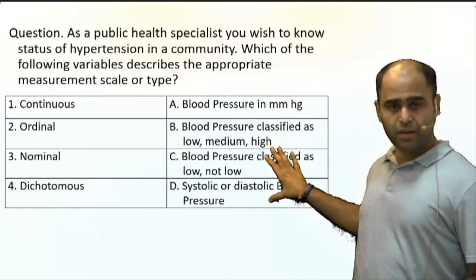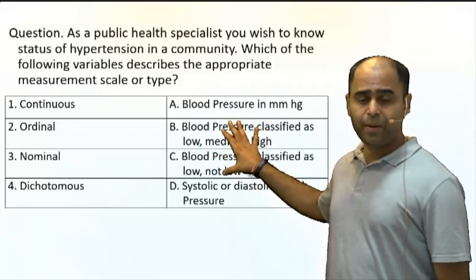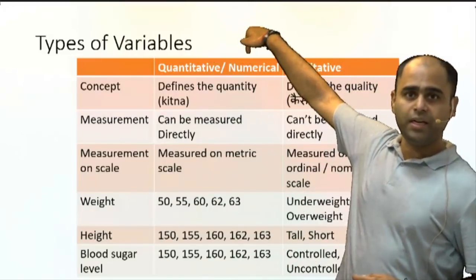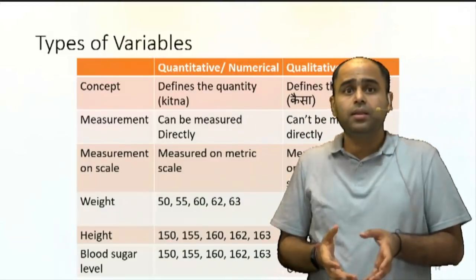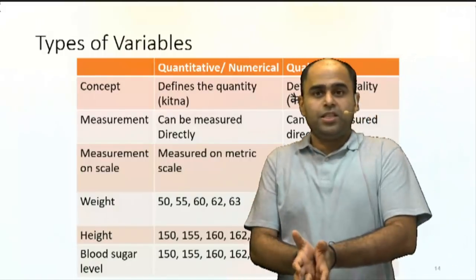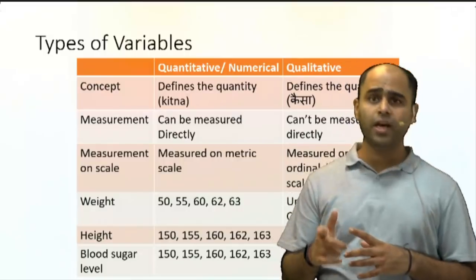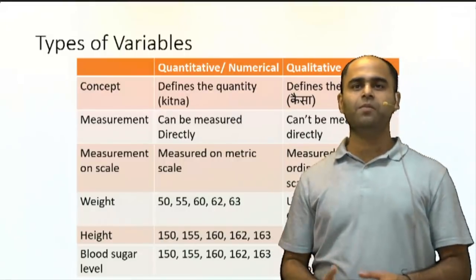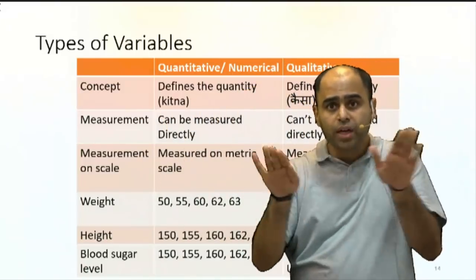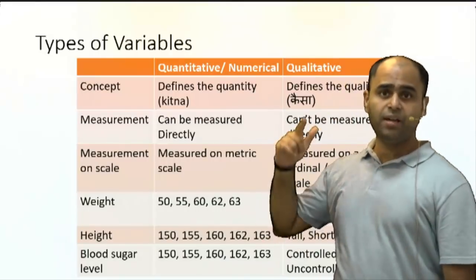There is a table given which we will analyze. Let us first understand the different types of variables and scales — a bit of theoretical knowledge, very important. The first and most important classification: there are two types of variables — quantitative and qualitative. Quantity means 'how much,' quality means 'what kind.' My weight is 80 kg — that is quantity. 'I am overweight' — that is quality. Some variables are purely qualitative, like race, religion, or gender.